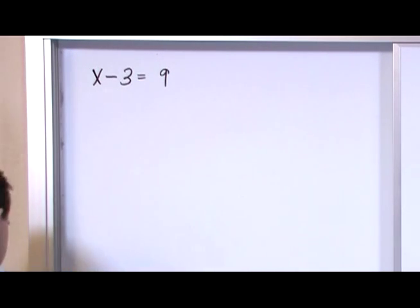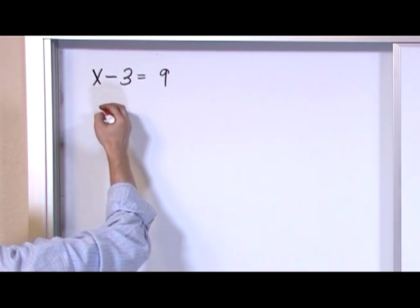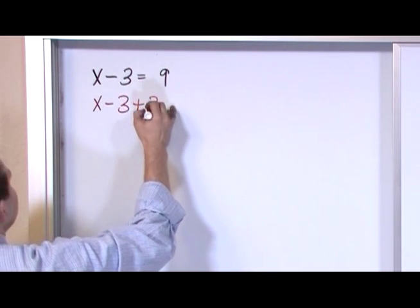So what you want to do is, because you have subtraction, addition is the opposite of subtraction, so you want to add 3 to both sides.